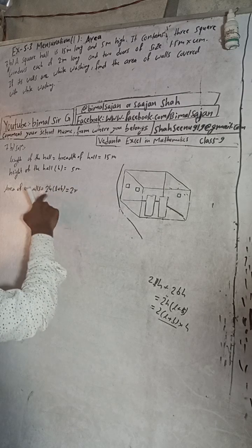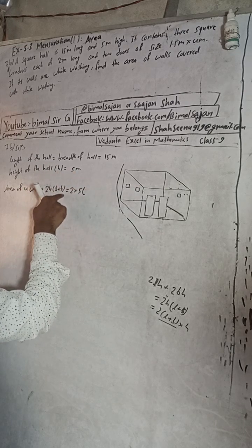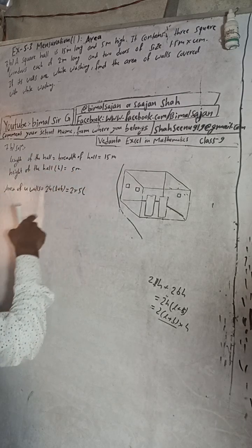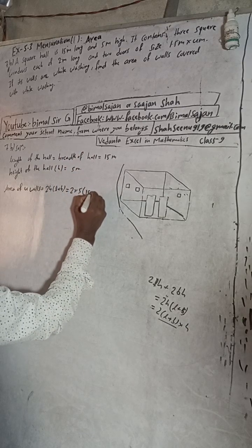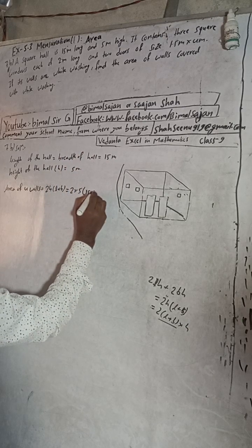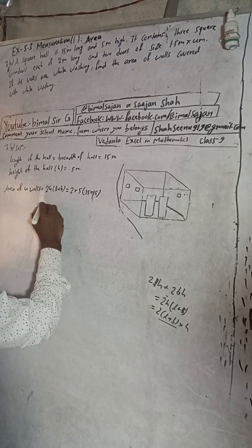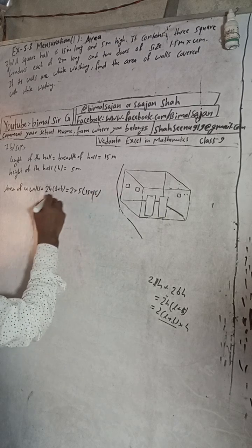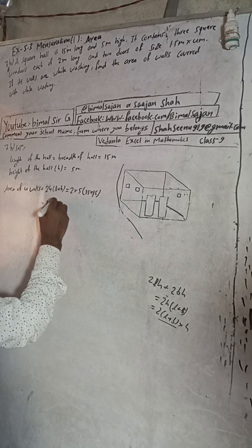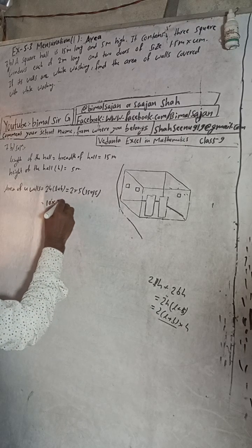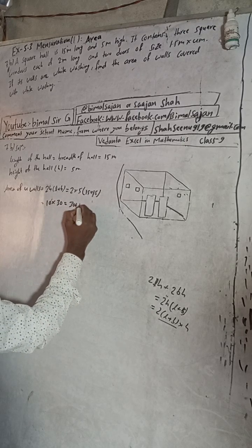Area of four walls = 2 × h × (l + b). Since it is a square room, length equals breadth equals 15 meters. So: 2 × 5 × (15 + 15) = 2 × 5 × 30 = 300 square meters.